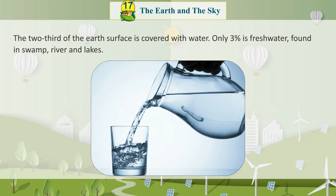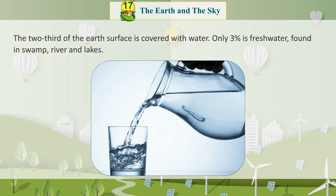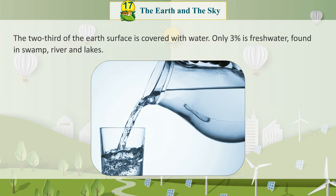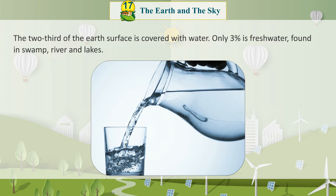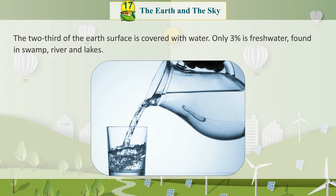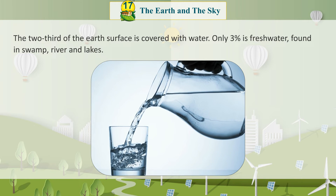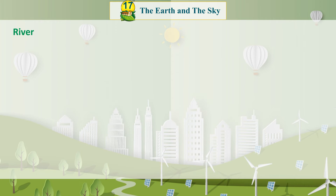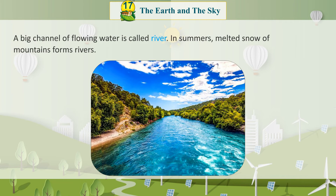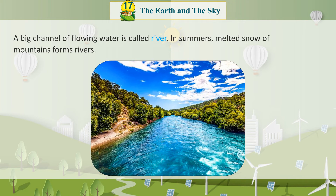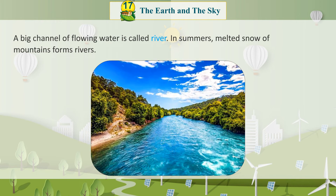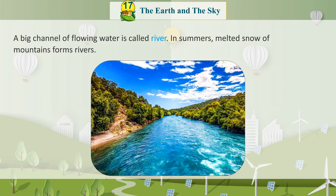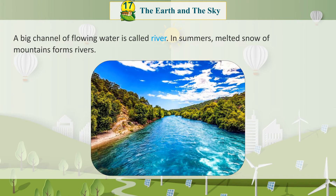Water: Two-thirds of the earth's surface is covered with water. Only 3% is fresh water, found in swamps, rivers, and lakes. A big channel of flowing water is called a river. In summers, melted snow of mountains forms rivers.